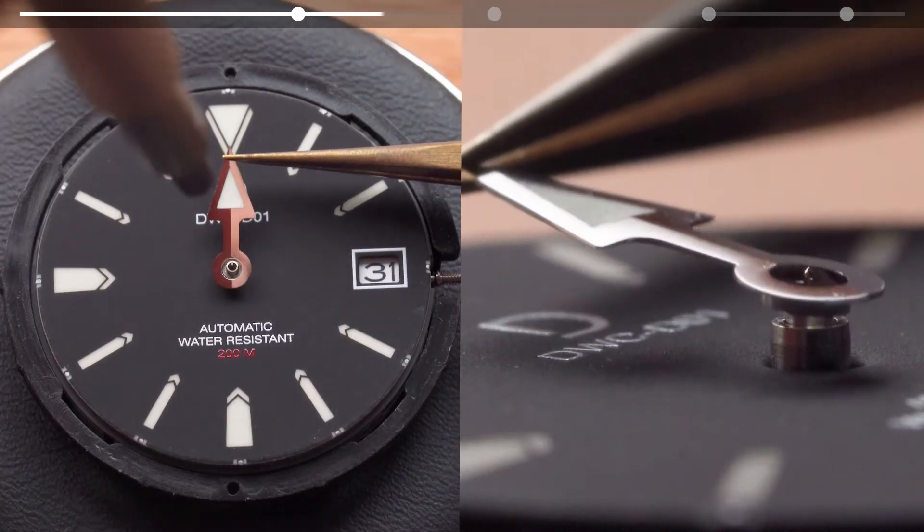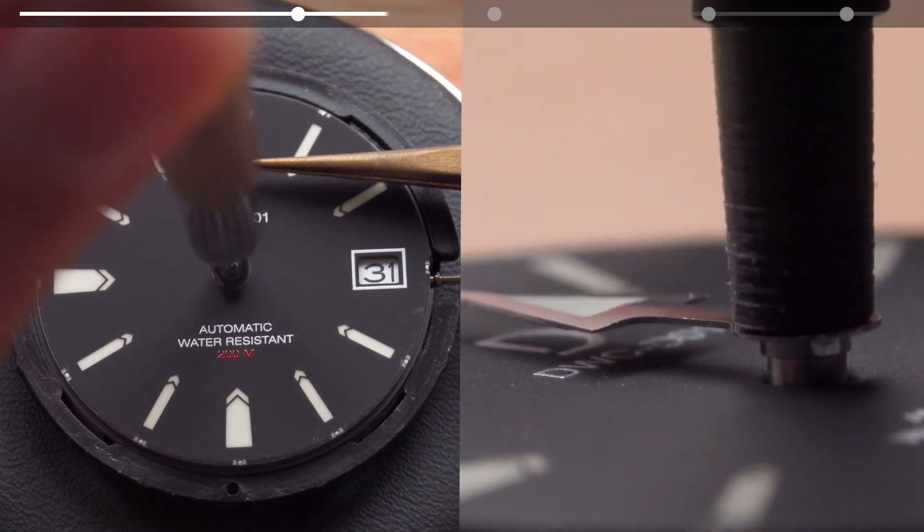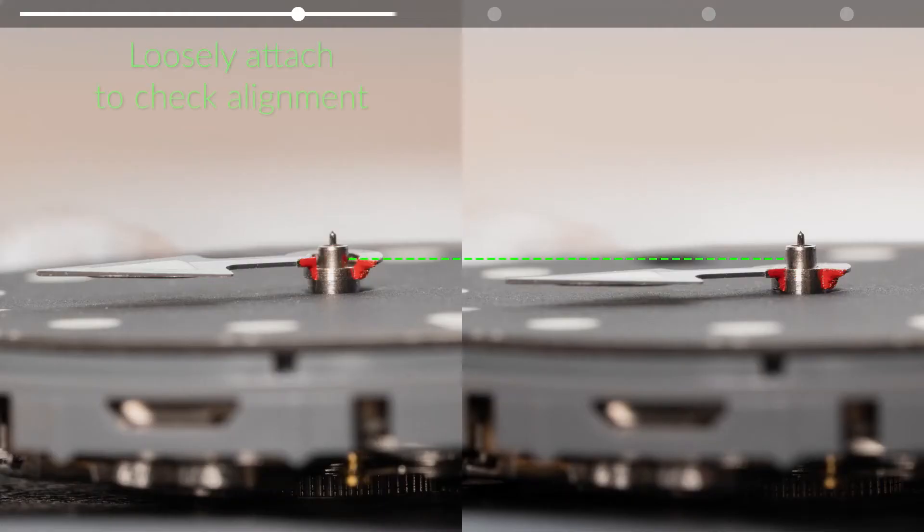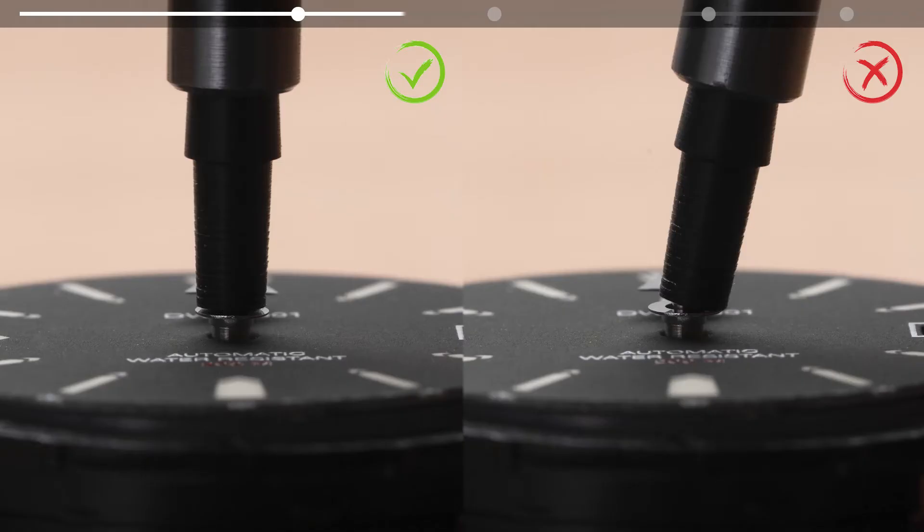For all hand installations, we loosely attach them first so we can check the alignment before setting the hands. Try to keep the tool vertical and align it to the hour wheel. Be careful not to bend the post for the second hand.